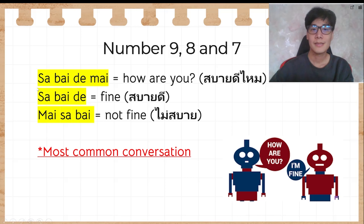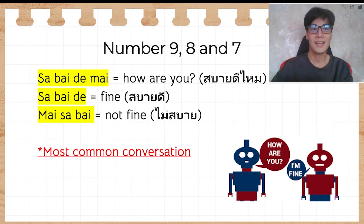Number 9, 8, and 7: สบายดีไหม means 'how are you?'